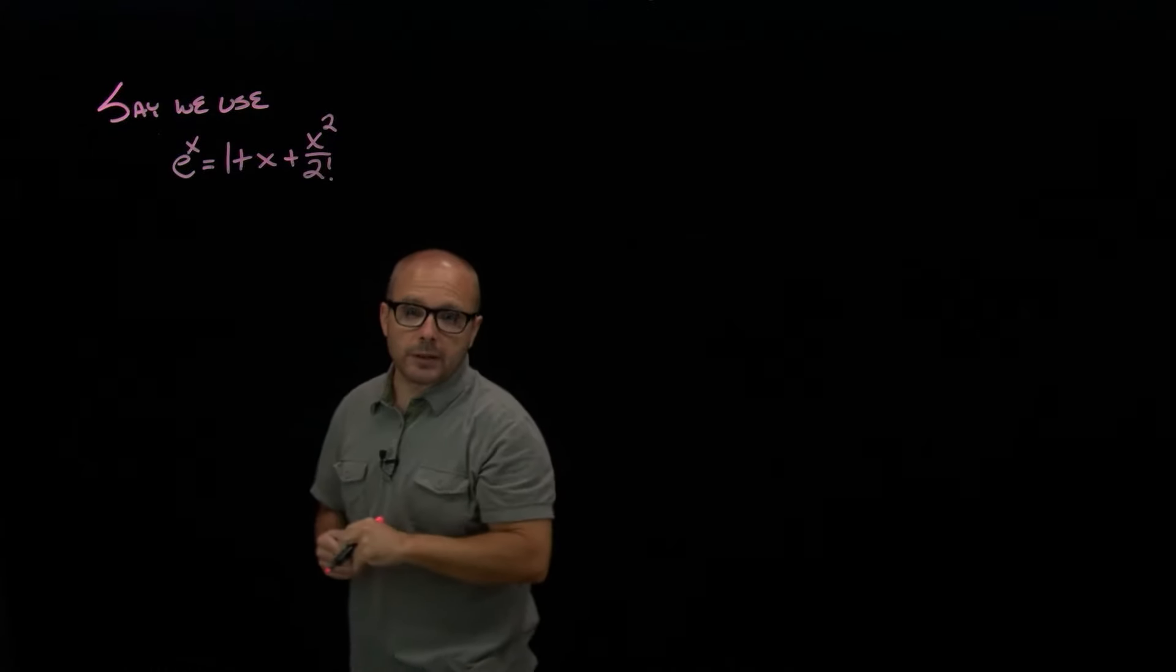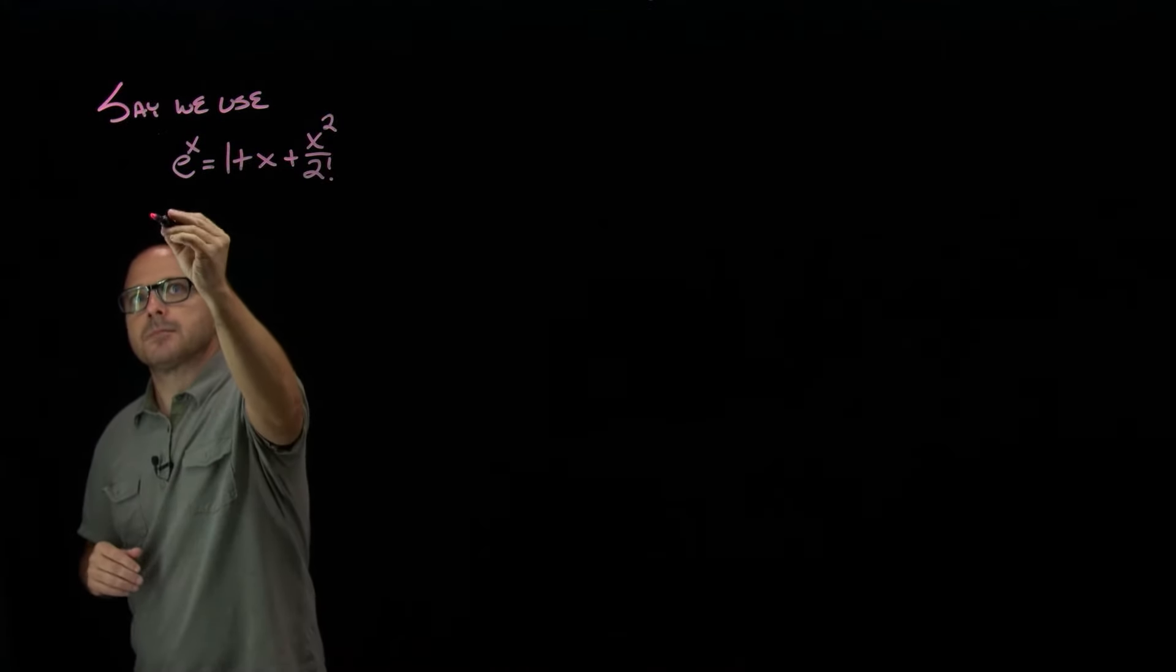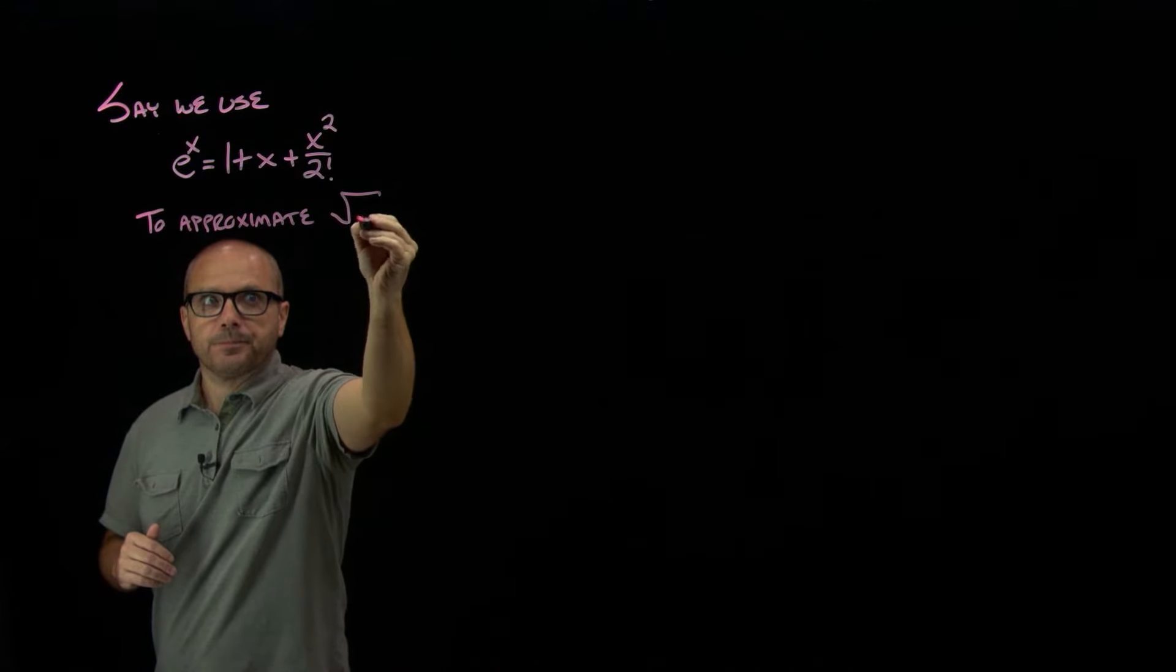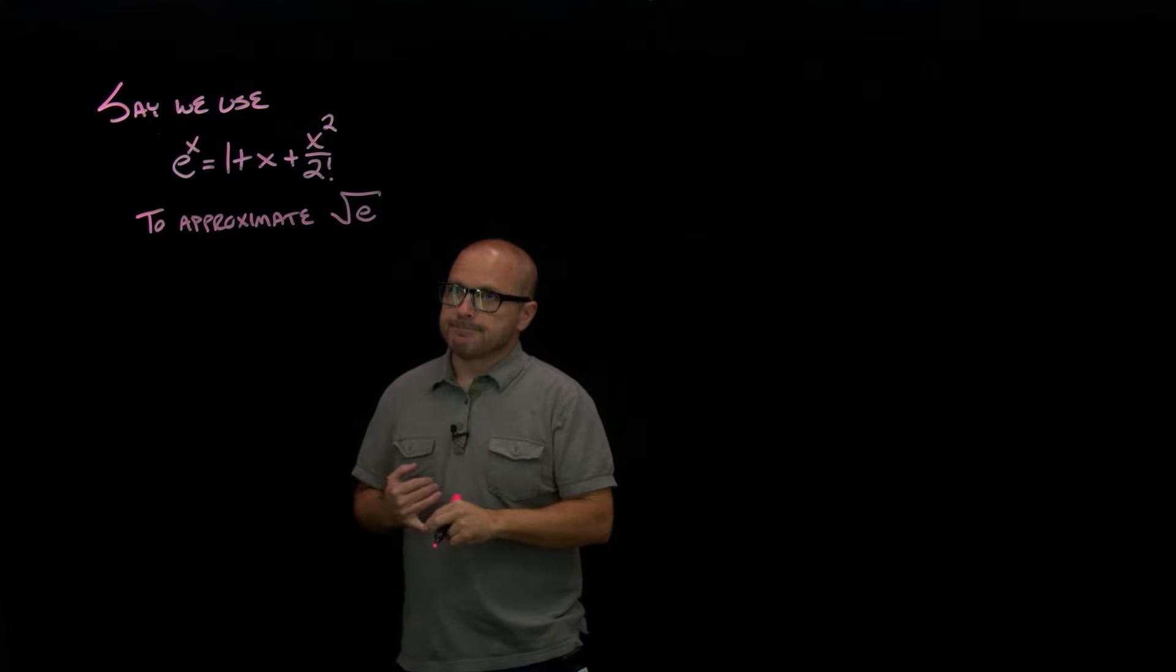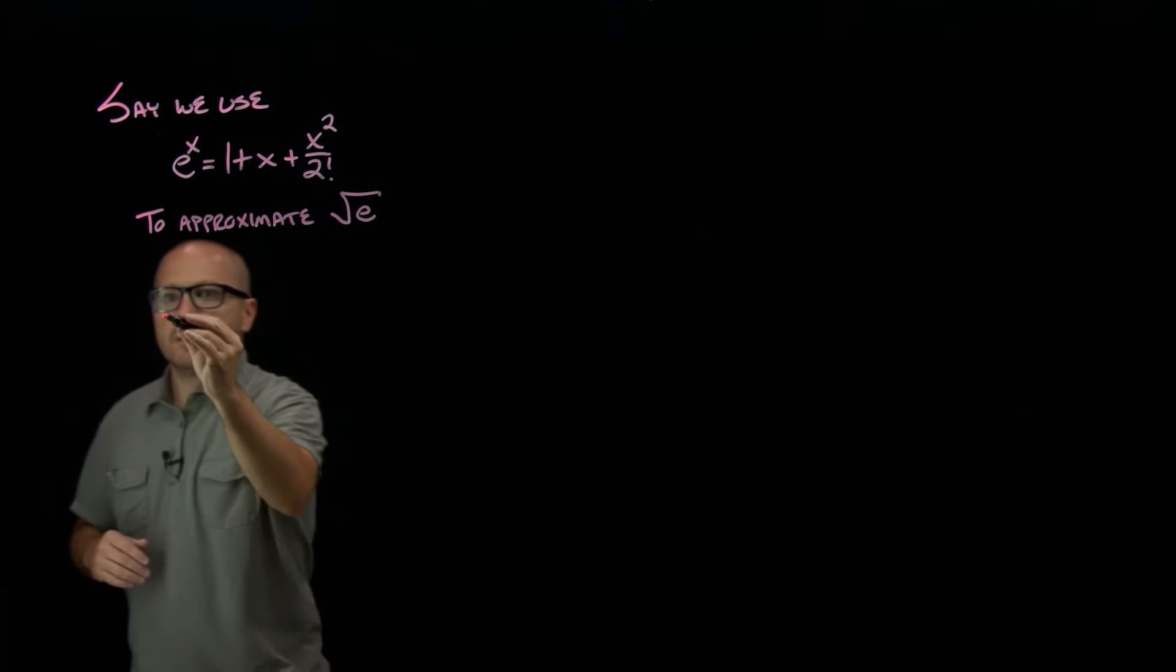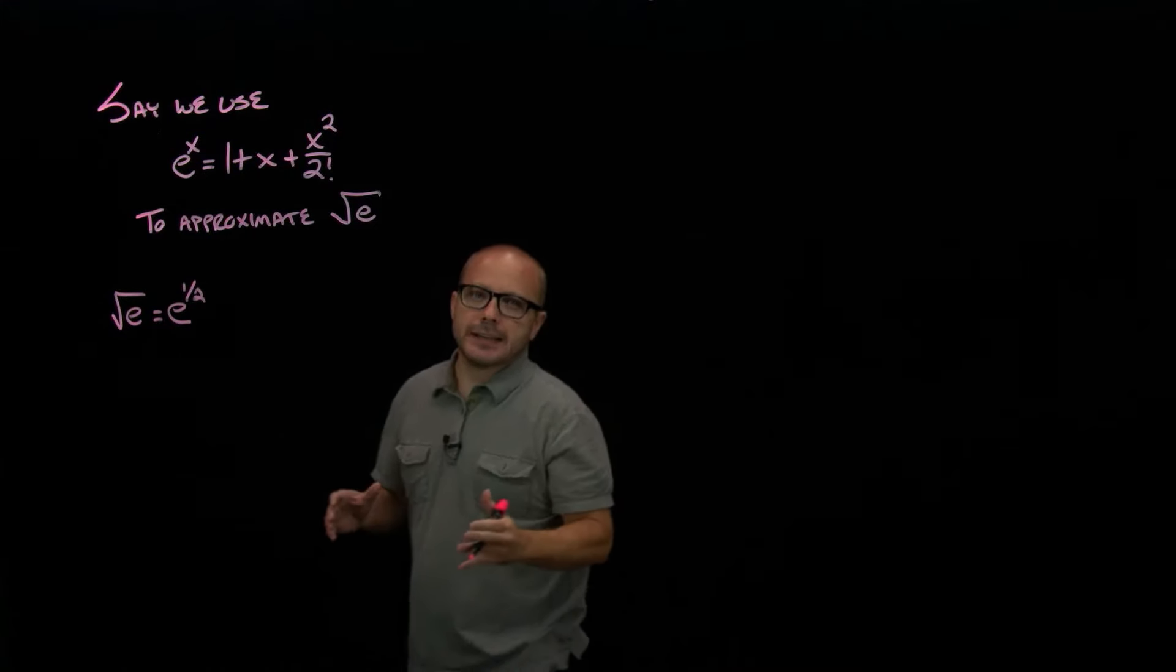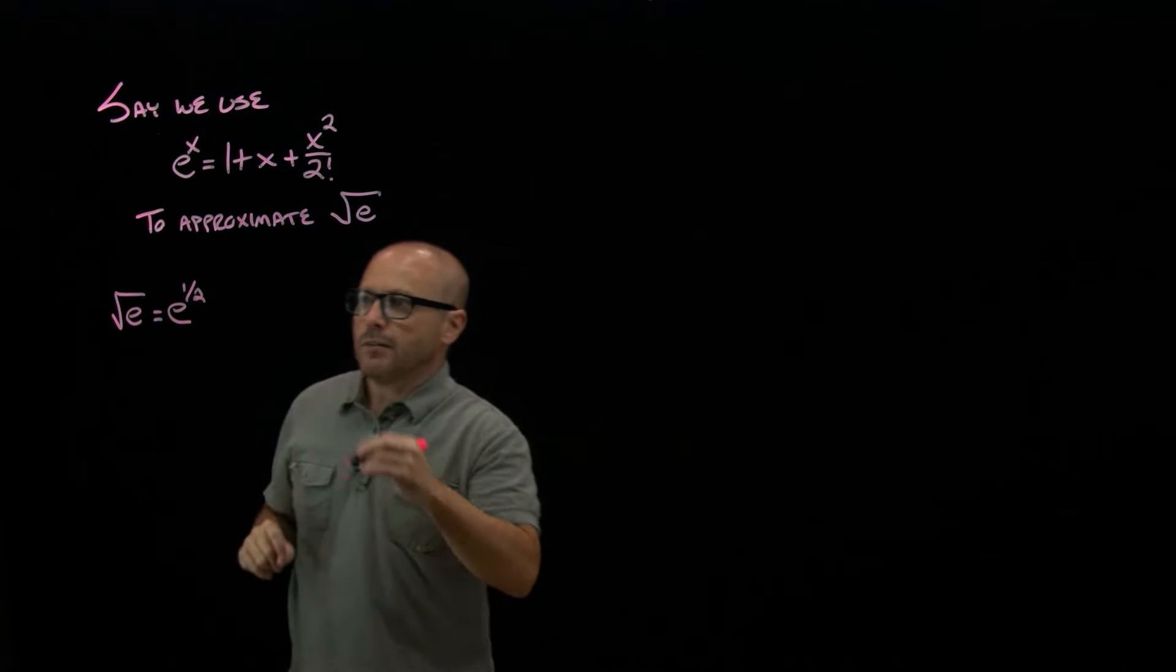So we're using the second order Taylor polynomial there. Say we use this approximation to approximate square root of e. Now what do we mean by that? First of all, what is square root of e? Square root of e is e to the half. So what we're wanting to do is evaluate the function e to the x at x equal to half. But since we don't know how to do that, instead we're going to evaluate the polynomial.